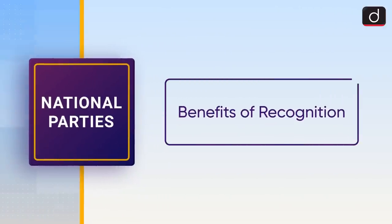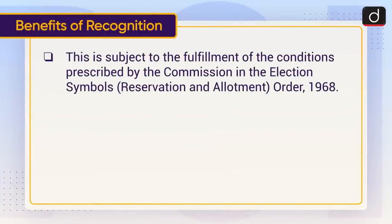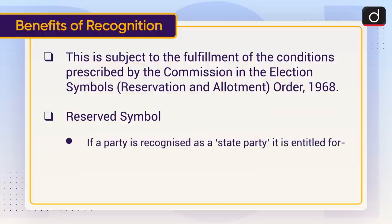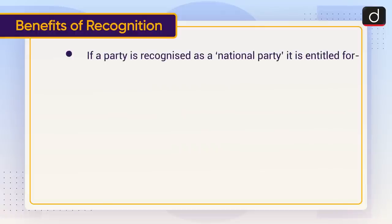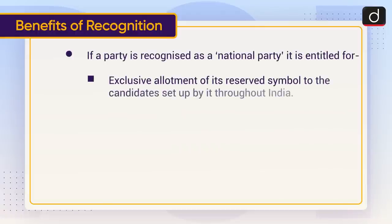Now let's discuss the benefits of recognition, subject to fulfillment of the conditions prescribed by the Commission in the Election Symbols (Reservation and Allotment) Order, 1968. Regarding the reserved symbol: if a party is recognized as a state party, it is entitled to exclusive allotment of its reserved symbol to candidates it sets up in that state. If recognized as a national party, it is entitled to exclusive allotment of its reserved symbol to candidates set up by it throughout India.